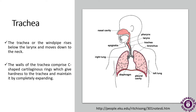Next is the trachea, or windpipe. It rises below the larynx and moves down the neck, as shown in the diagrammatic representation. It is divided into two branches. The walls of the trachea comprise C-shaped cartilaginous rings which give hardness to the trachea and maintain it from completely collapsing. It extends further down to the breastbone and splits into two bronchi, one for each lung.